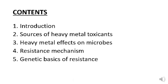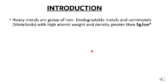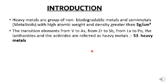These are the contents which we are going to discuss in this video. Introduction to Heavy Metals: heavy metals are a group of non-biodegradable metals and semi-metals known as metalloids, with high atomic weight and density greater than 5 grams per centimeter cube. The transition elements from vanadium to arsenic, zirconium to antimony, lanthanum to polonium, the lanthanides and actinides are referred to as heavy metals. There are a total of 53 heavy metals present in the environment.